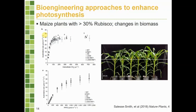Another example is where people tried to increase rubisco content in leaves. Rubisco is the main enzyme fixing CO2, and when they did this in maize, they saw some increase in photosynthetic rate - shown in the photosynthesis rate versus intercellular CO2 response plot - and also some increase in plant biomass and plant height. So it appears changing photosynthesis does have some effect on plant performance, but the question is whether we'll still see this increase in performance when the plant is grown in the field.